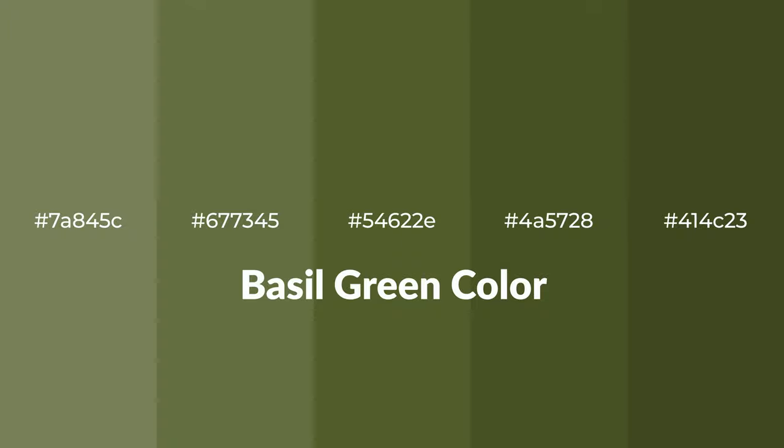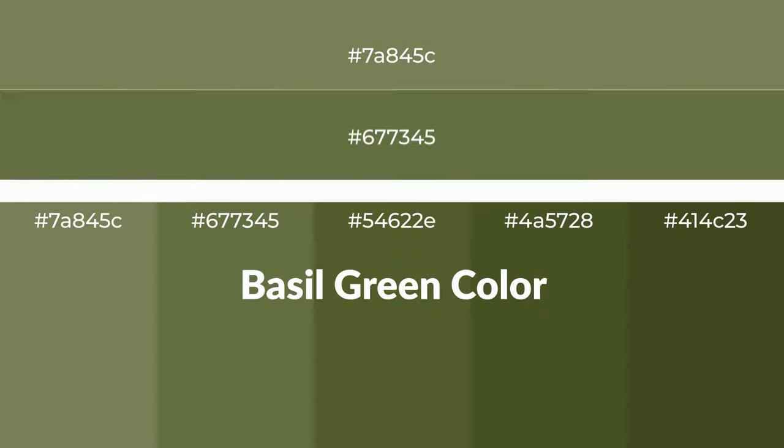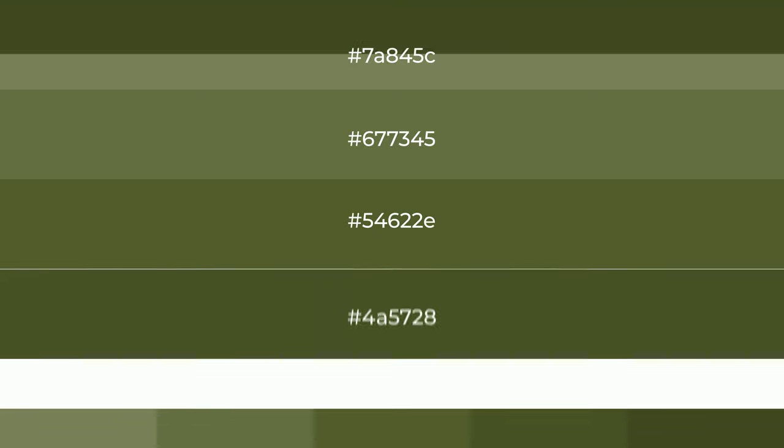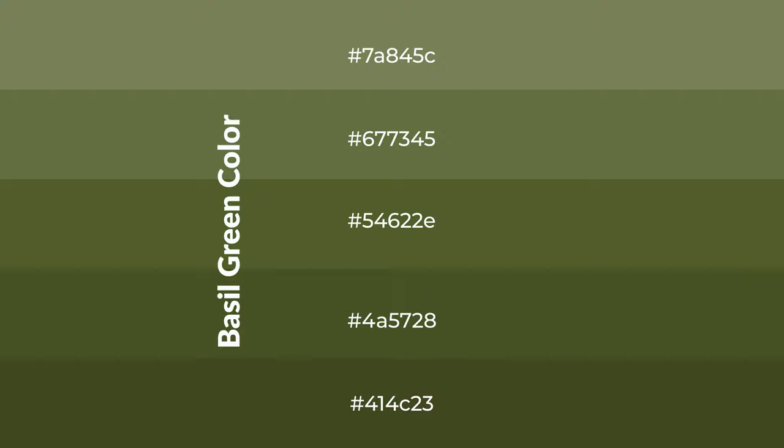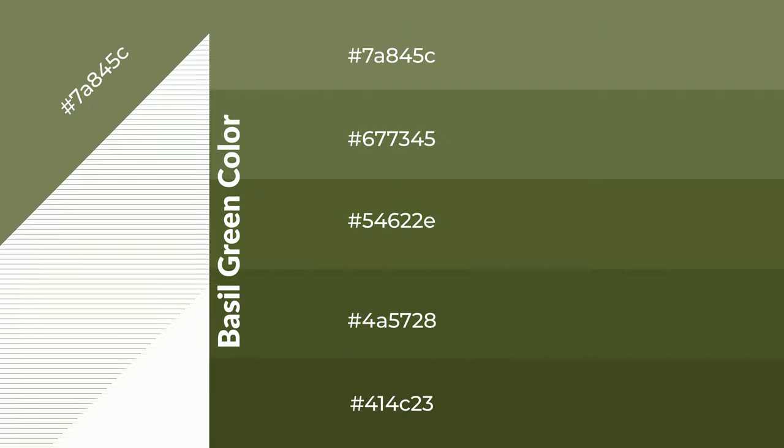Warm shades of basil green color with green hue for your next project. To generate tints of a color, we add white to the color. Tints create light and exquisite emotions. To generate shades of a color, we add black to the color, and it is used in patterns, 3D effects, and layers. Shades create depth and drama.